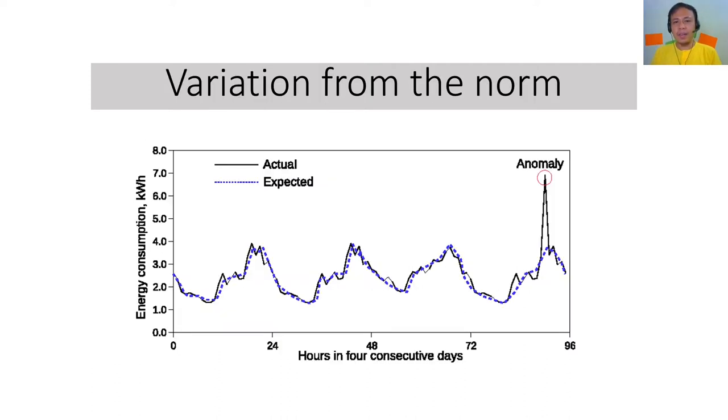What is anomaly detection? When we say anomaly detection, it's actually a variation from the norm. What is then the basis of this norm? Now in our world, we have the assumption that there are a lot of processes and behaviors that follow certain processes, that follow certain norms.